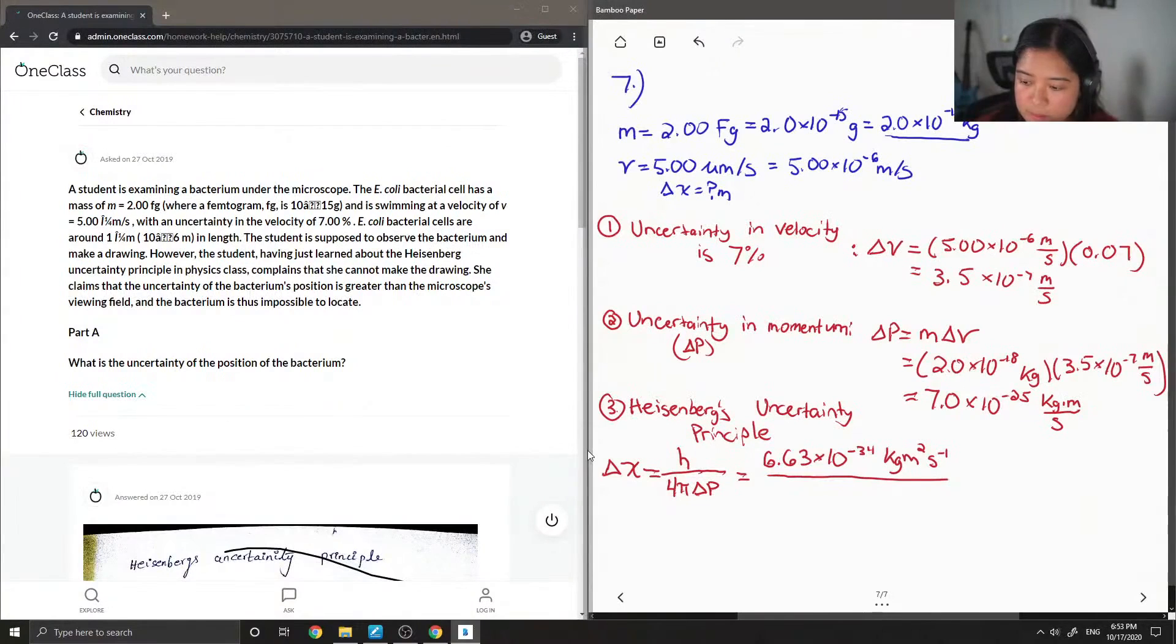Then I'll just plug in everything else we know. Okay, so you can see that one of the meters cancels out. Kilograms cancels out. And then the seconds cancels out as well. Leaving delta x to have a final value of 7.54 times 10 to the negative 11 meters.